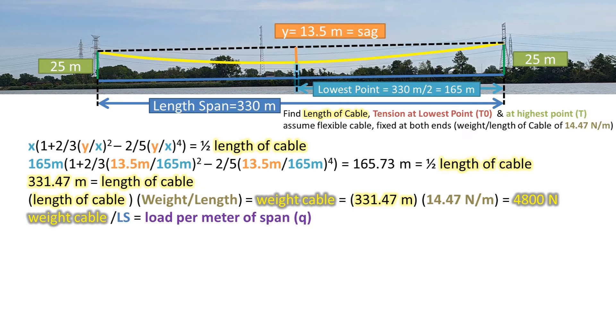Now we need to get the load per unit of span, so we can take the weight and divide by the length of the span of 330 meters. We get 14.54 newtons per meter. Now multiplying this value times half the span, we get 2400 newtons, which really we could have just taken half the cable weight.